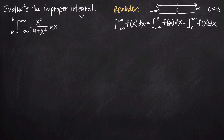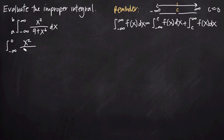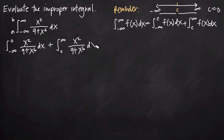If we pick c equals 0, this first integral becomes negative infinity to 0 — just an improper integral of case type 2. This second integral is going to be an improper integral of case type 1, from 0 to positive infinity. So we rewrite the original integral as the integral from negative infinity to 0 of x squared over 9 plus x to the 6th dx, plus the integral from 0 to positive infinity of x squared over 9 plus x to the 6th dx.